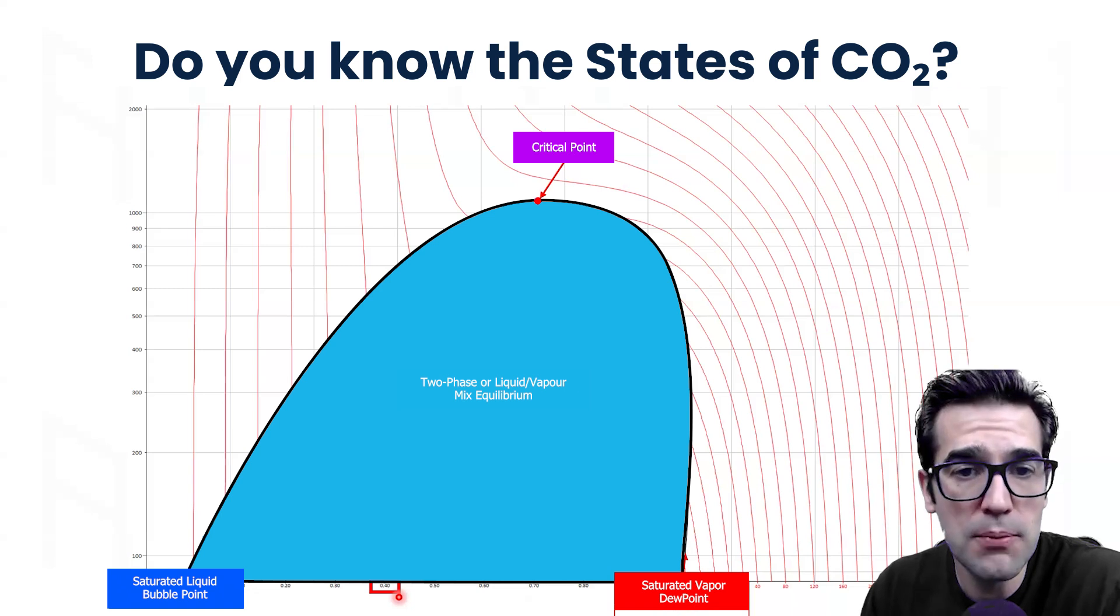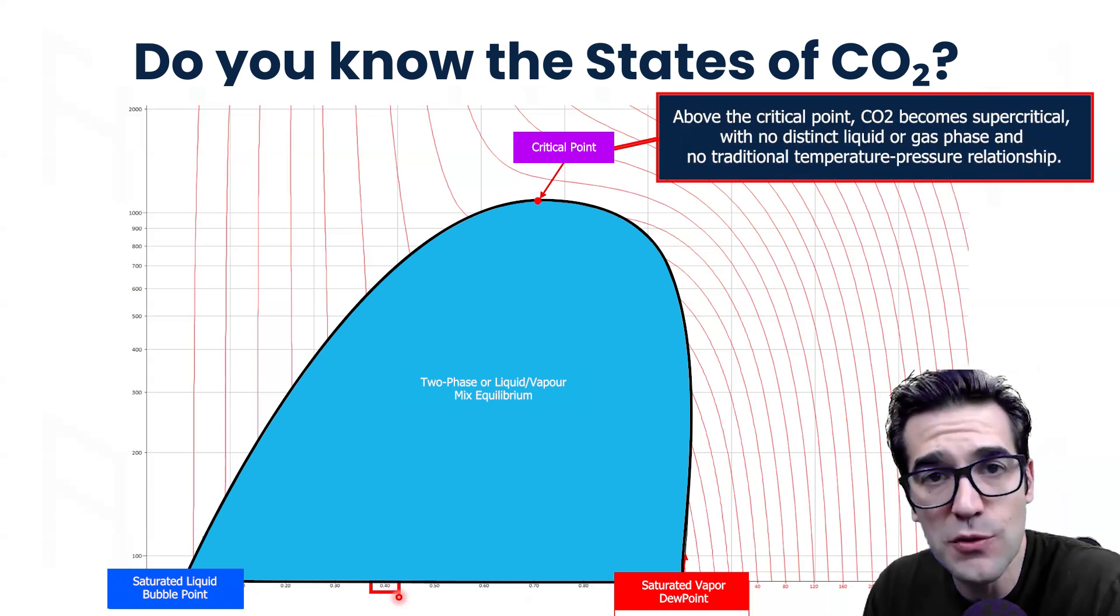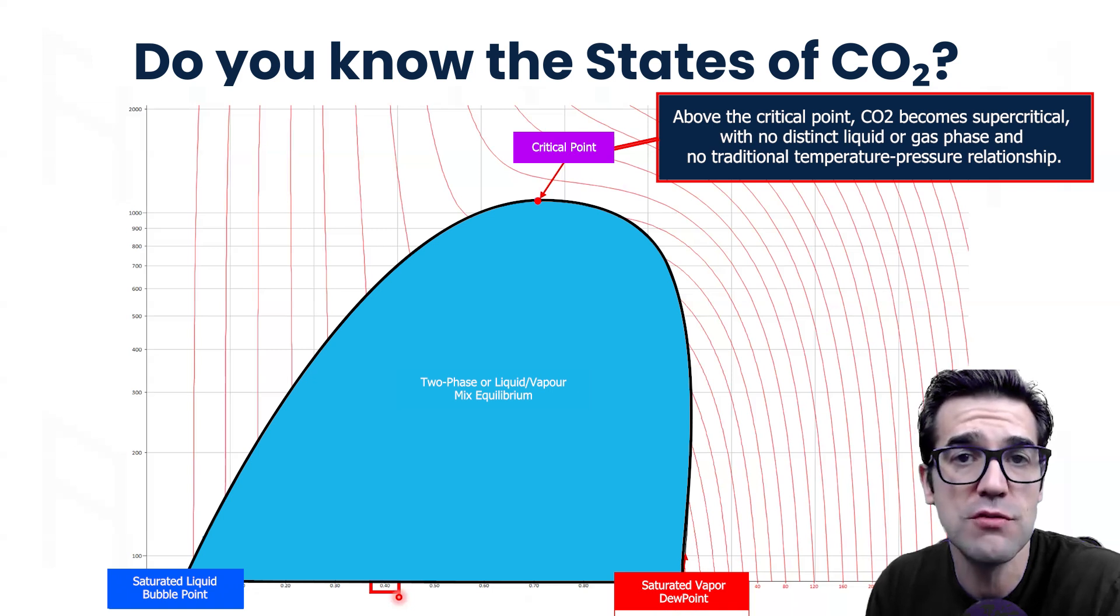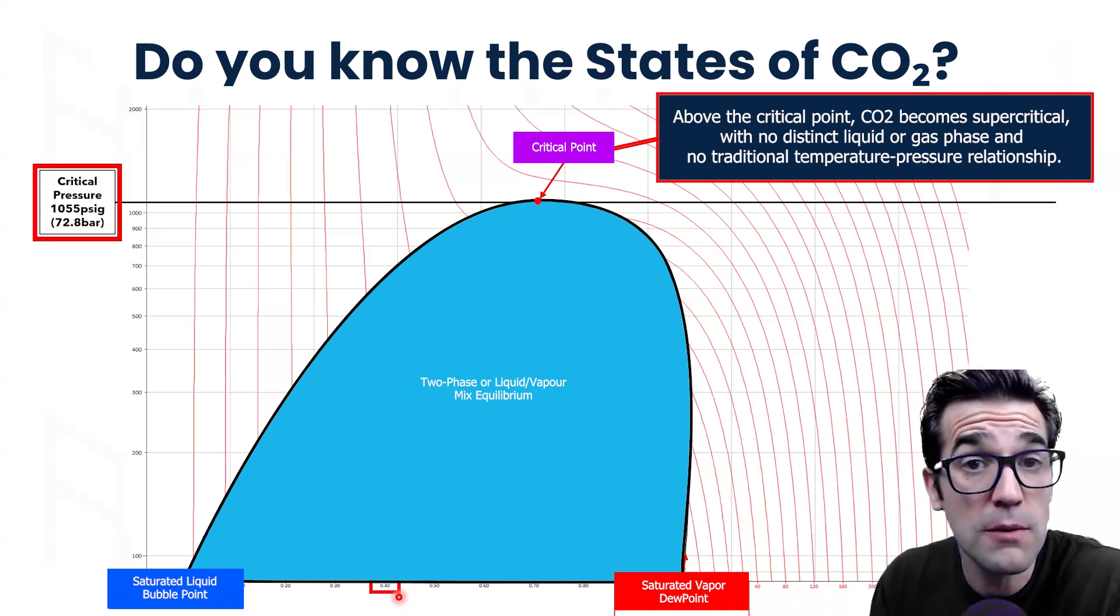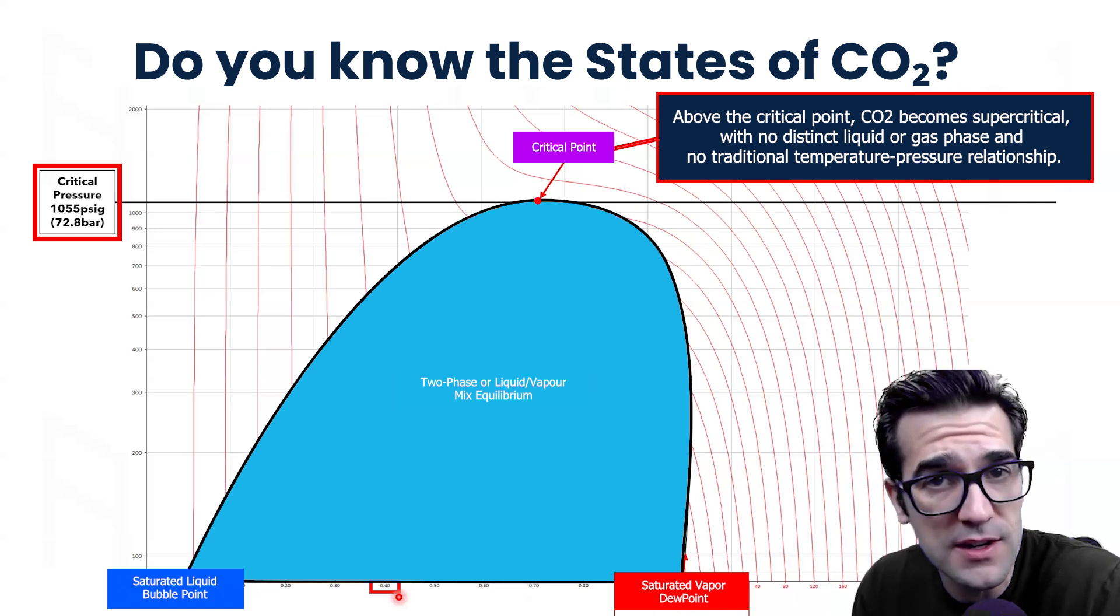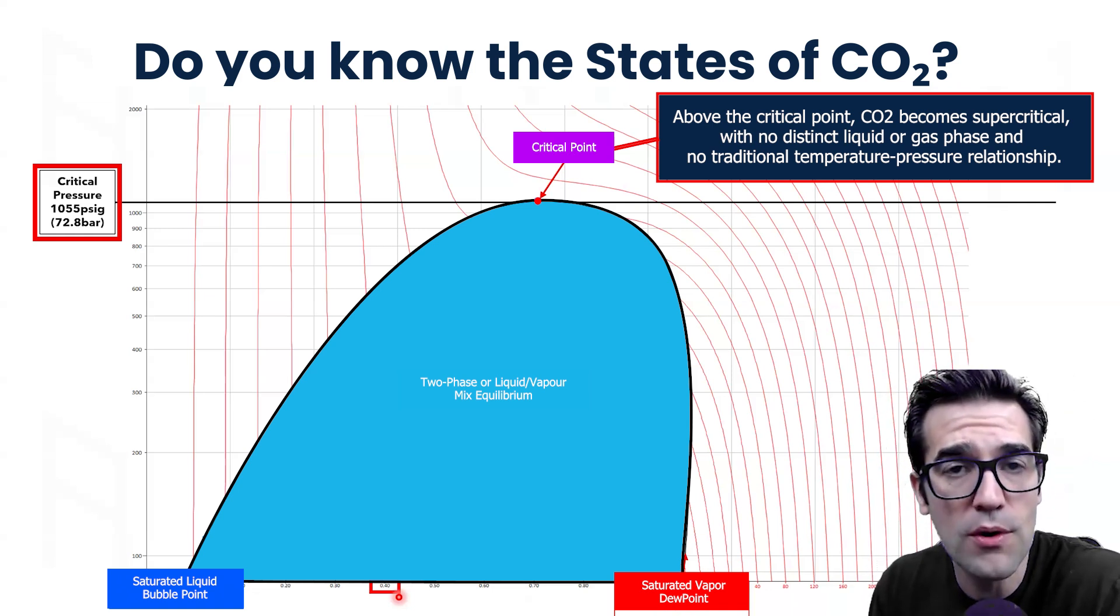Next point is the critical point. Anything above the critical point is an undefined fluid. There's no pressure temperature relationship. How do we find the critical point? First step is the critical pressure. The critical pressure is 1055 PSIG or 72.8 bar. This is very important to know.